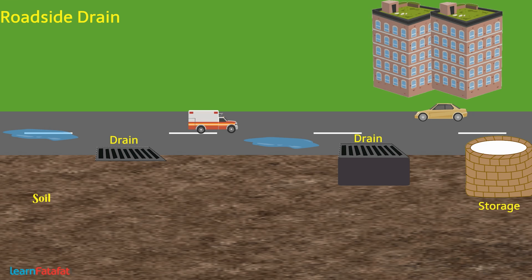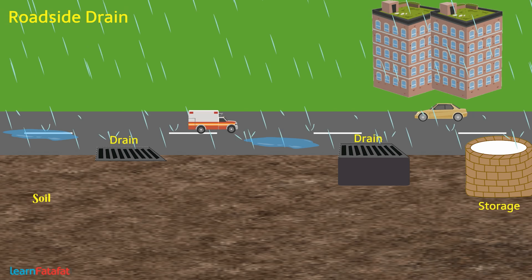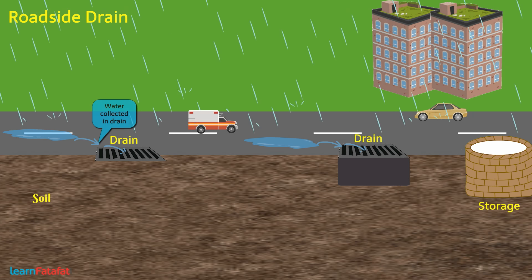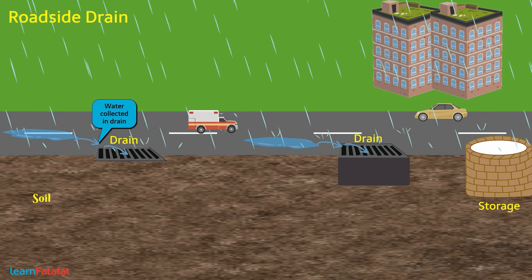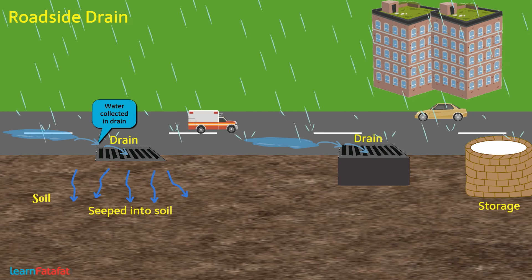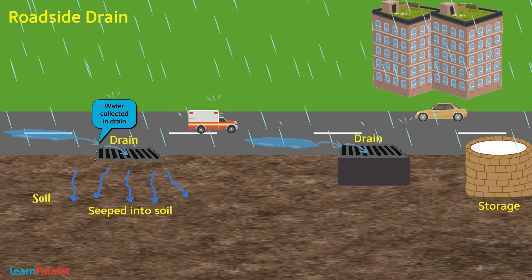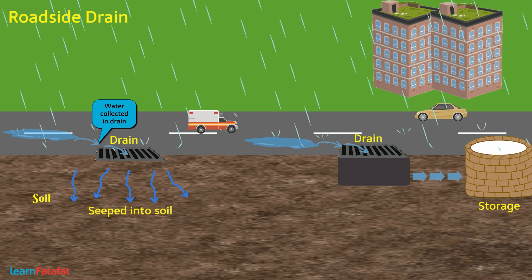The second method involves roadside drains. Rainwater falling on roads gets collected in the drains. The drains can be modified so that water entering them seeps directly into the soil, or this water can be collected in storage structures such as a well.